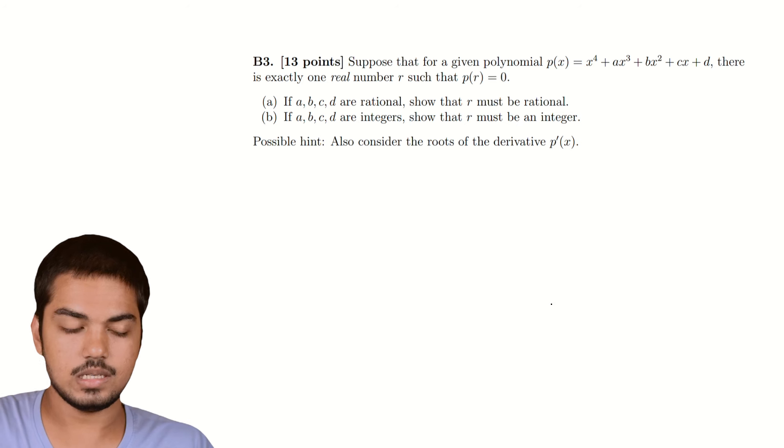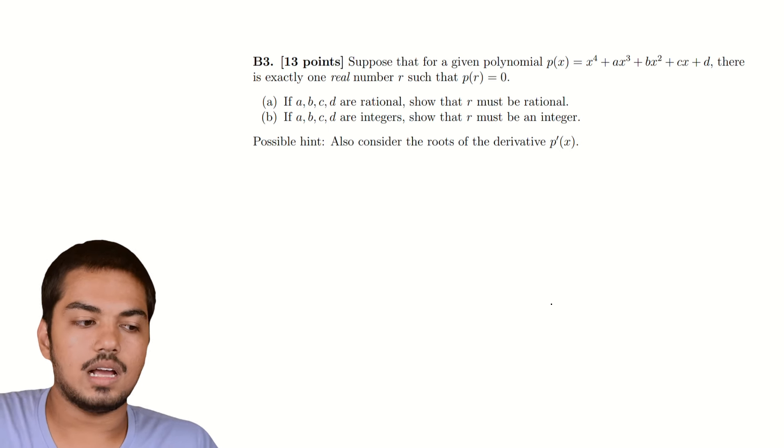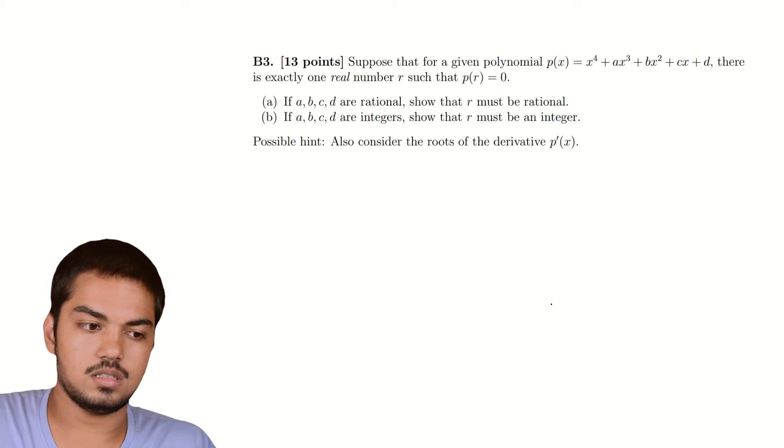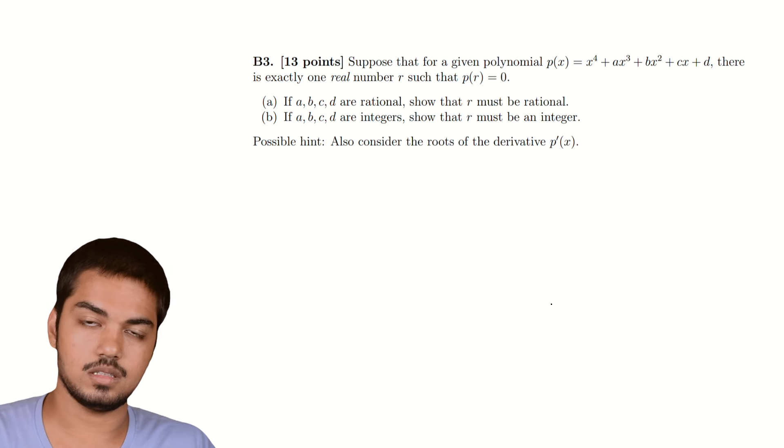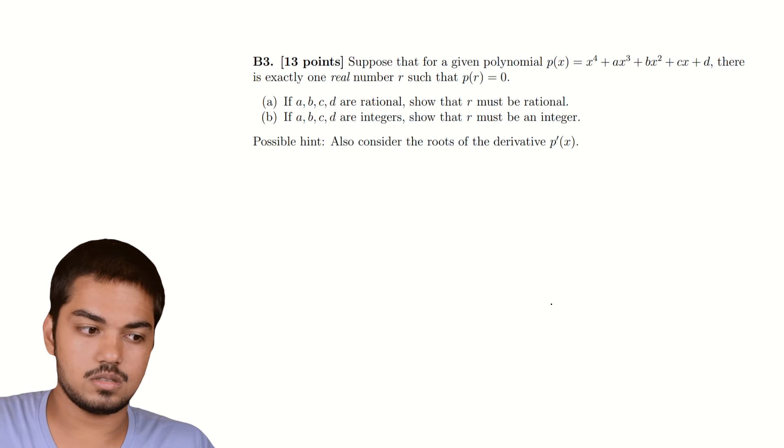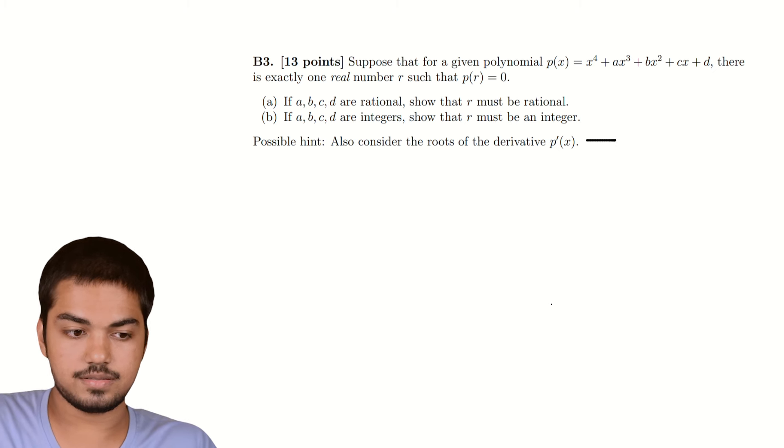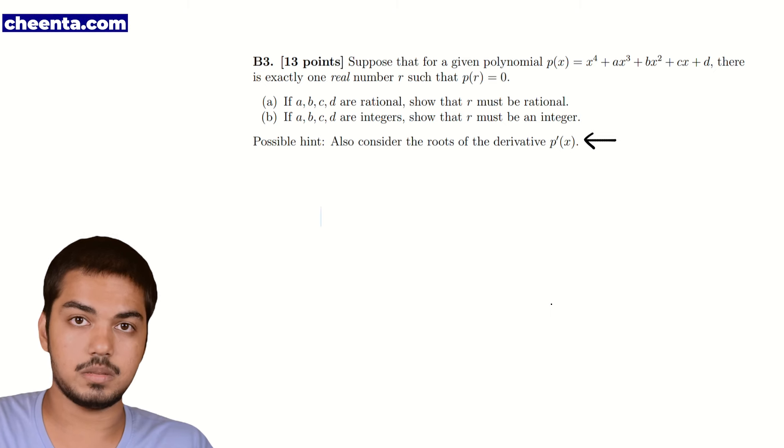So, as we can see, we are given a polynomial P(x) = x^4 + ax^3 + dx^2 + ax + d, which is a 4 degree polynomial. And it's given that there is exactly one real number R such that P(R) = 0, which means that the polynomial has exactly one real root. If ABCD are rational, show that R must be rational. And if ABCD are integers, show that R must be an integer. In the test itself, students have provided this following hint, which was to consider the roots, the derivatives, P'(x). And we'll see shortly whether it's a really good piece of advice.